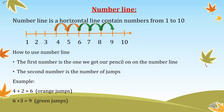Number line: a number line is a horizontal line containing numbers from one to ten, as we see on this figure. To use the number line, the first number is the one we place our pencil on, and the second number is the number of jumps.